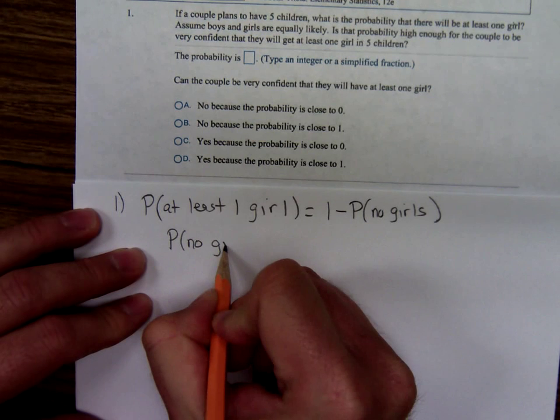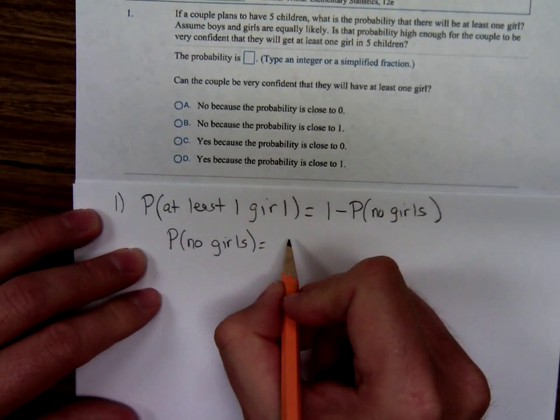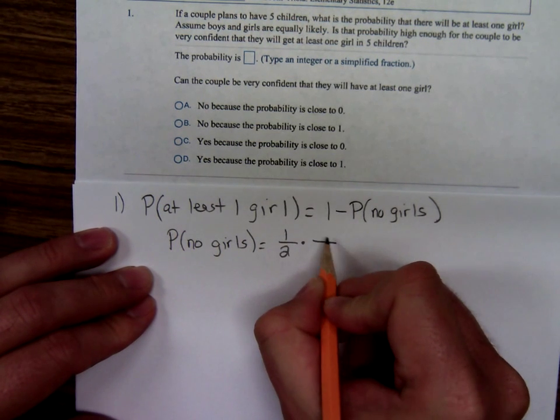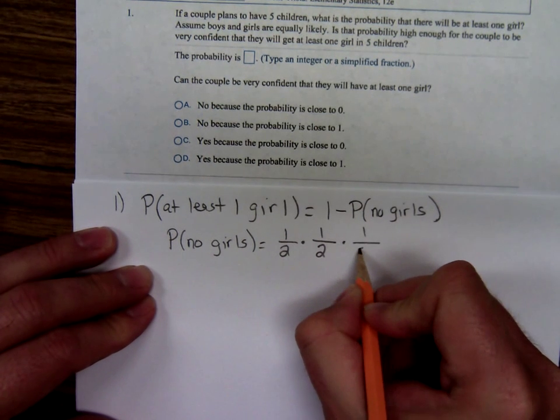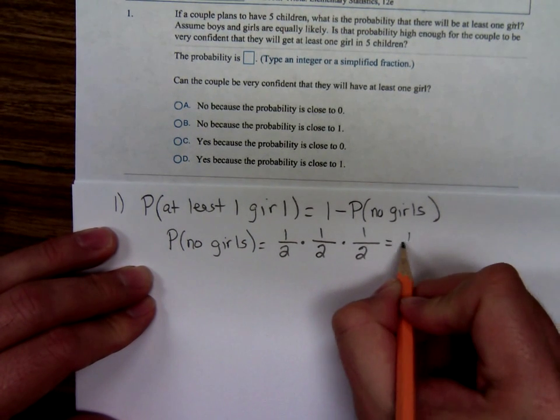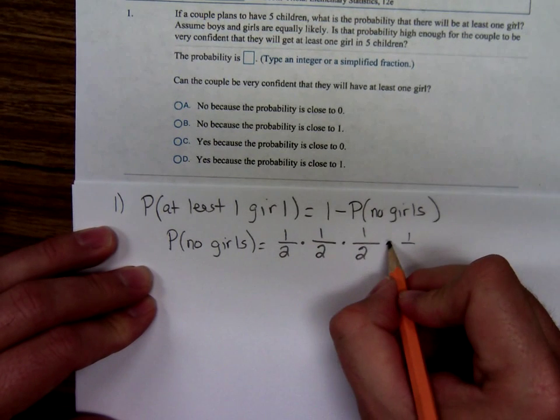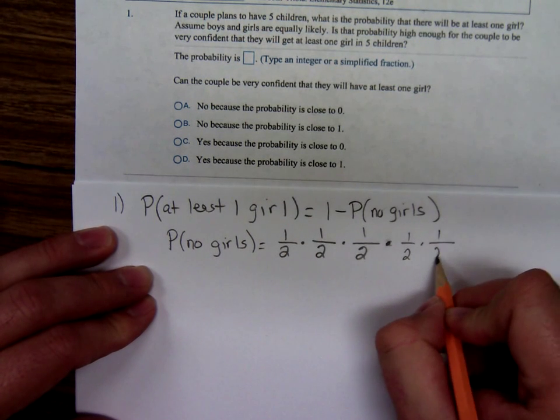That would be the same as getting all boys. The probability that the first child is a boy is one half. The probability the second child is a boy is one half. The probability of the third child being a boy is one half. The probability the fourth child is a boy, and so forth.